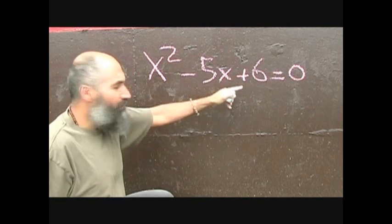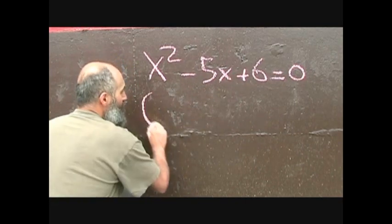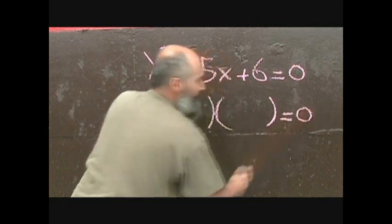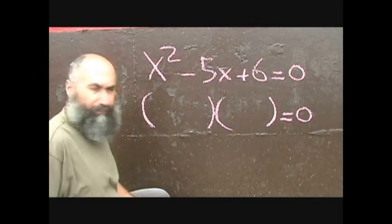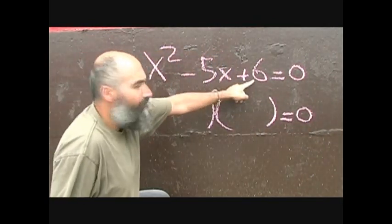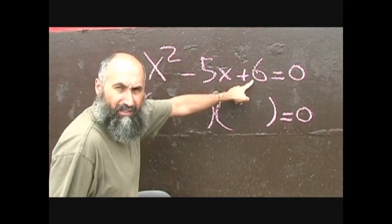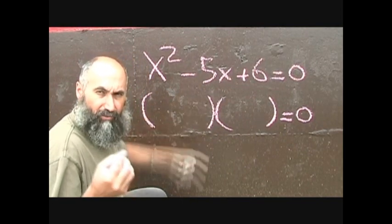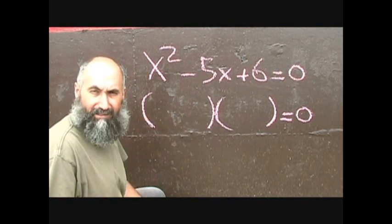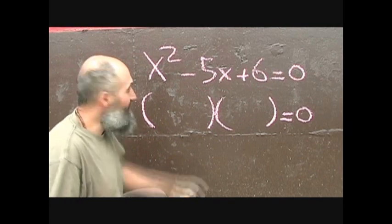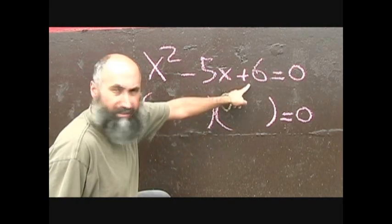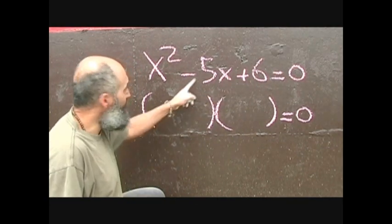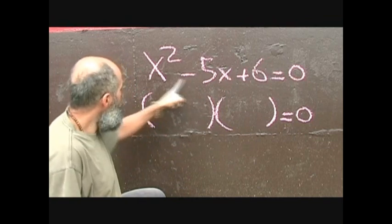When you're solving this, all you do is you go bracket, bracket, bracket, bracket, equals 0. You're looking for two numbers that multiply to give you 6 and add to give you negative 5. Negative 2 times negative 3 gives you positive 6. Negative 2 plus negative 3 gives you negative 5. So those are your numbers.